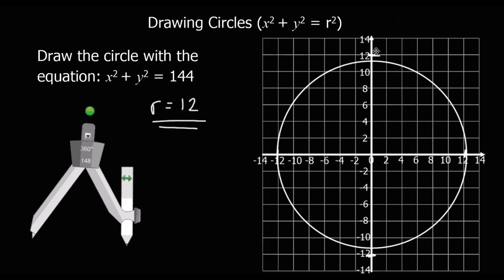And again, it should have gone through 12 and minus 12 here, but these obviously aren't actual squares. So unfortunately we've missed slightly, but the point is that it should go through 12, minus 12, minus 12, and 12.